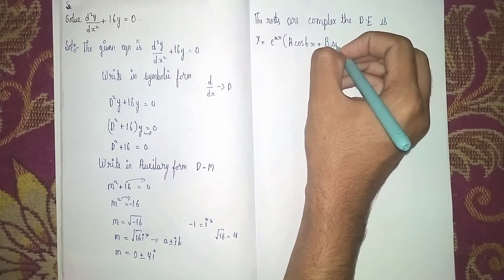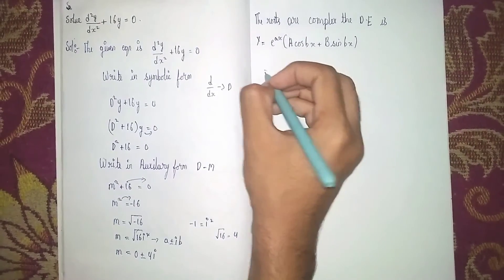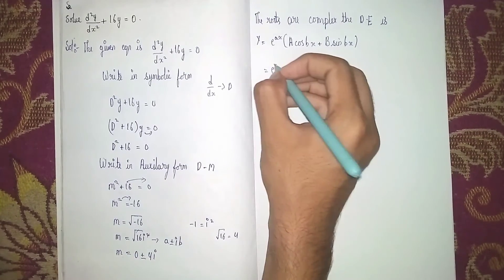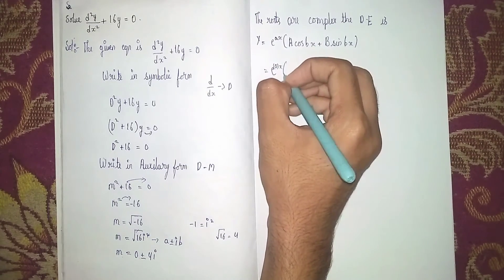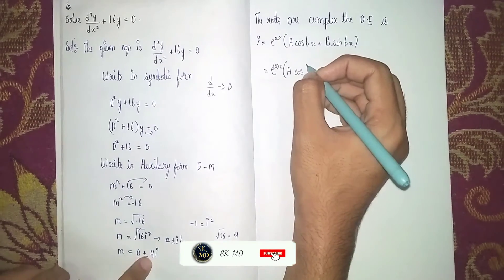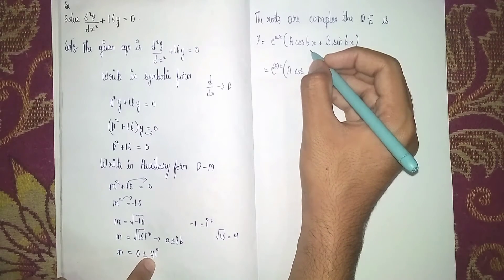Now substitute this. e power, what is a? Zero. So e power 0 into x into a into cos, what is b? 4. b is 4, 4x plus b into sine 4x.